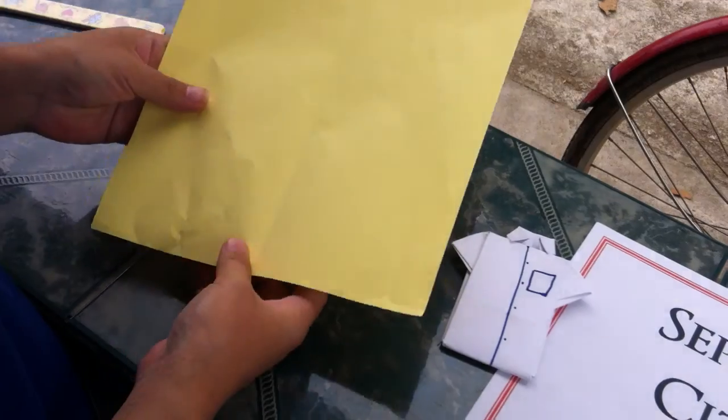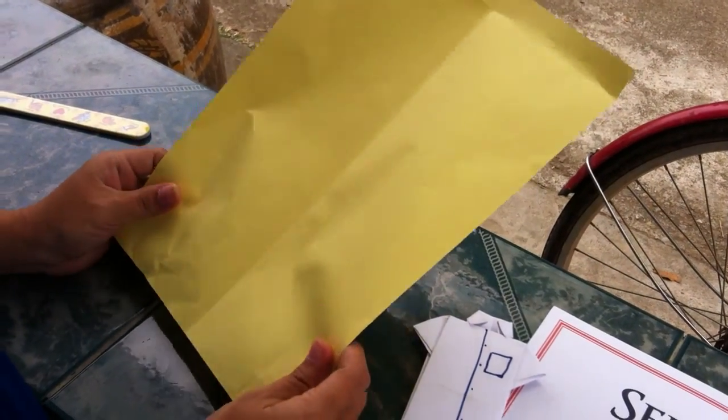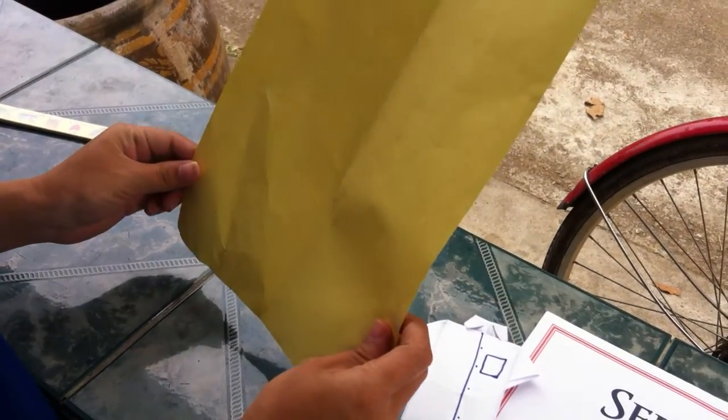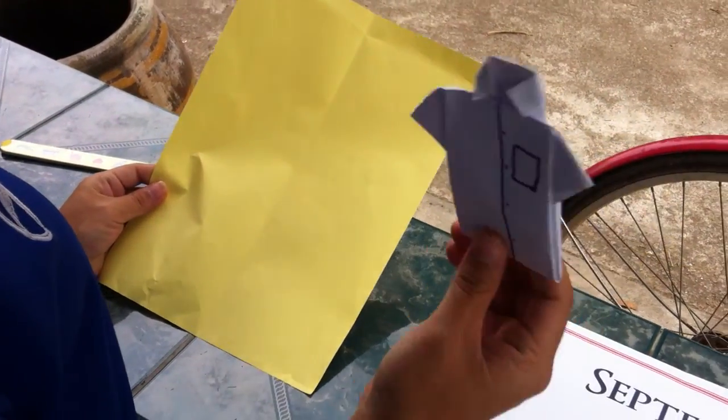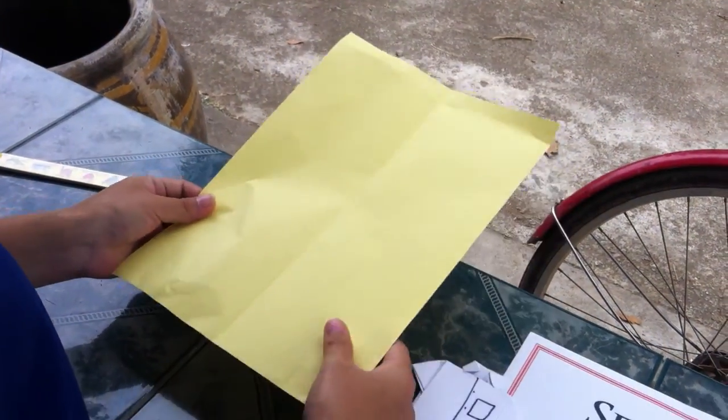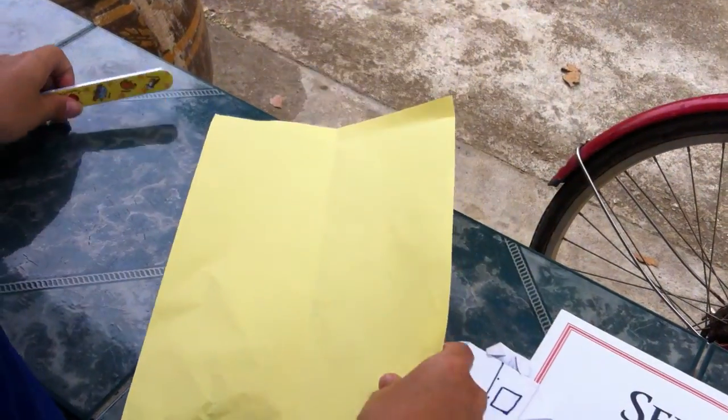First, take one paper which size you want. If you want to make a small shirt, you can choose a small paper. Now I am going to show you with this paper.